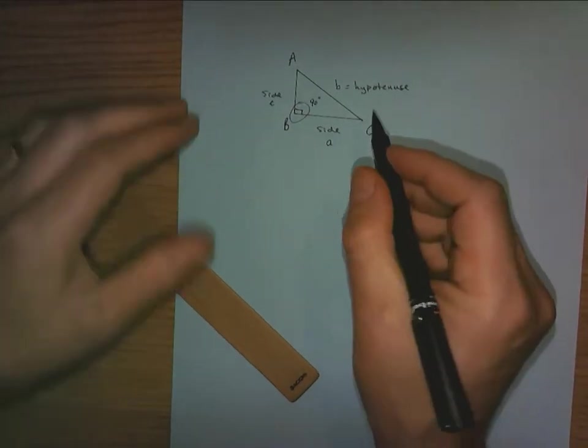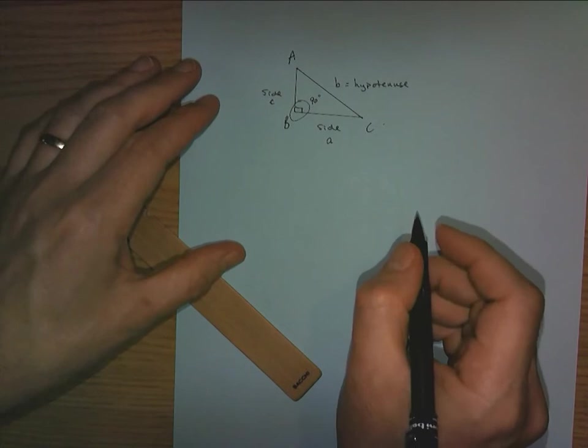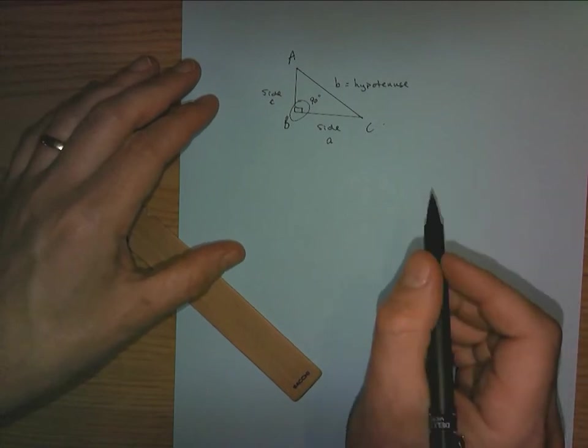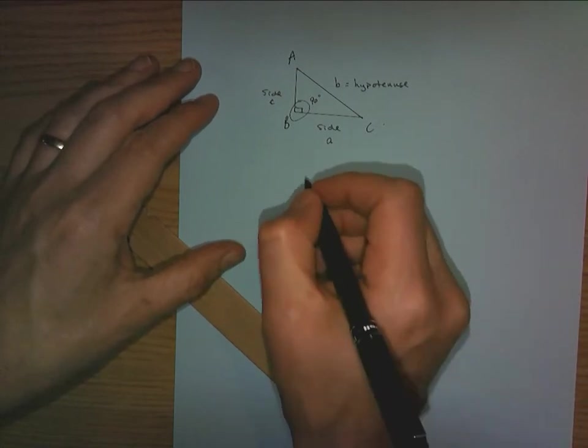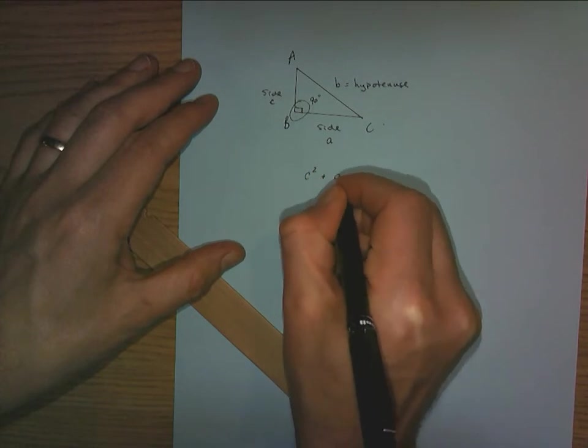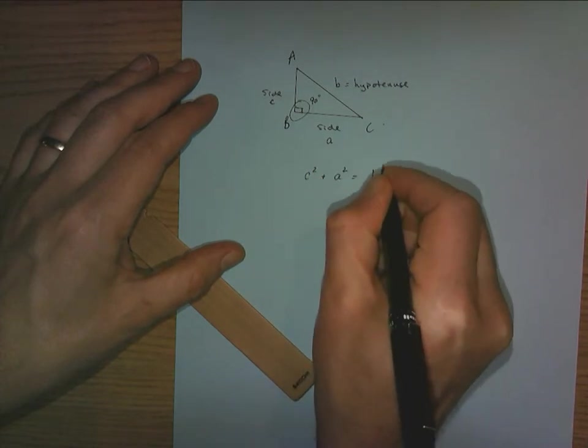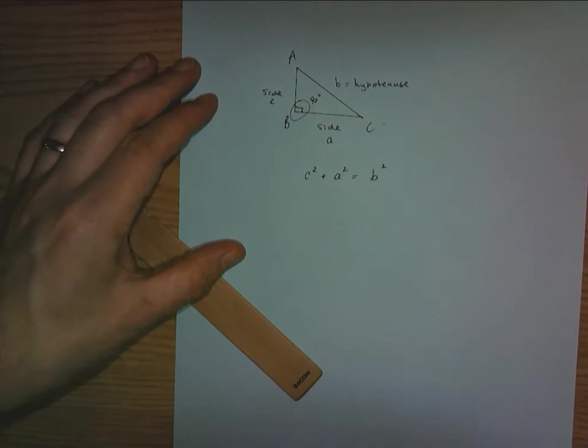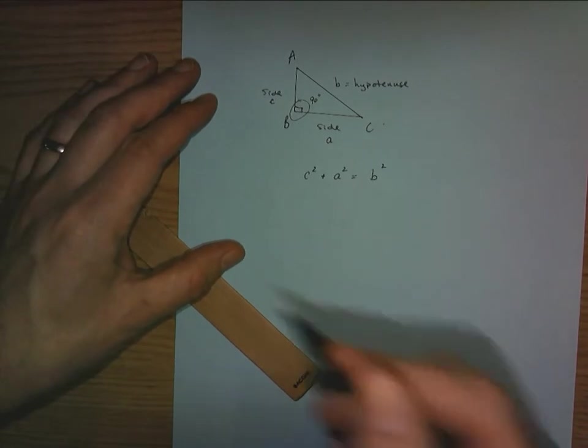Okay, so if we look at this and think about the Pythagorean Theorem, Pythagoras said that the hypotenuse squared will equal the sum of the other two side squares. So c squared plus a squared will equal b squared in this case. Taking a look at that, let's give this some numbers.